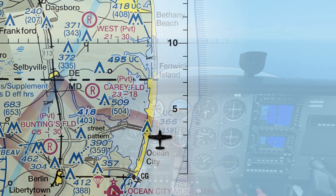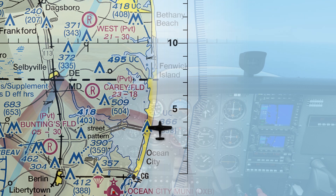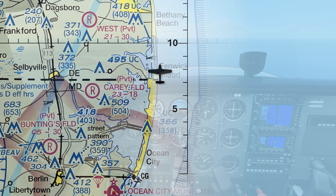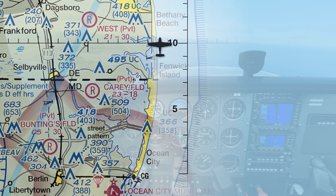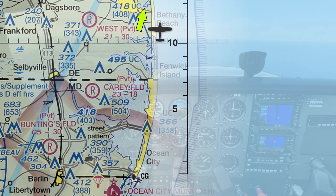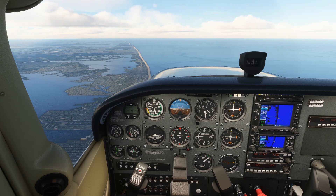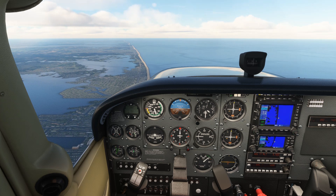We can see some distances to landmarks from the Route 50 bridge. It's about three and a half miles to the next prominent bridge or causeway, then about eight miles to the northern end of the developments in Ocean City. The beginning of Bethany Beach, Delaware is 10 miles from our starting point, and that little reservoir just inland is at the 13-mile point.